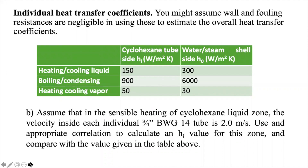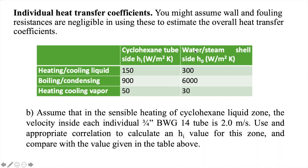Using a zone analysis hand calculation, we first estimate the total area required in m². We have given physical properties for cyclohexane and water steam: Cp liquid, Cp vapor, and enthalpy of vaporization for both streams. We are also given individual heat transfer coefficients, which simplifies the problem. The problem states wall and fouling resistances are negligible for estimating the overall heat transfer coefficient, so we only use the two convective terms. Boiling and condensing heat transfer coefficients are much higher when there is phase change.